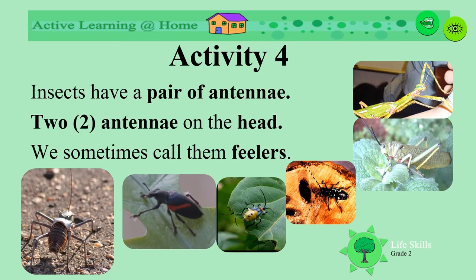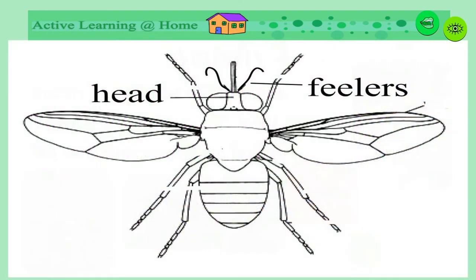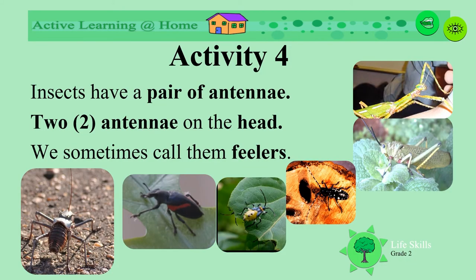Insects have a pair of antennae. The antennae are on their heads — sometimes we call them feelers. Look at all the different types of feelers or antennae.